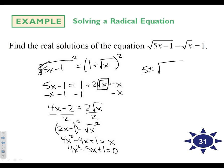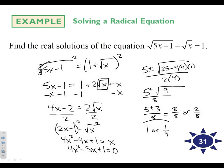5 plus or minus, 5 squared is 25 minus 4ac all over 2a. We'll have 5 plus or minus, this is 25 minus 16, which is 9 all over 8. 5 plus or minus 3 over 8. So we've got 8 over 8 or 2 over 8, which is 1 or 1 over 8. And we can plug those back in and they will work. Go ahead and try problem 31.